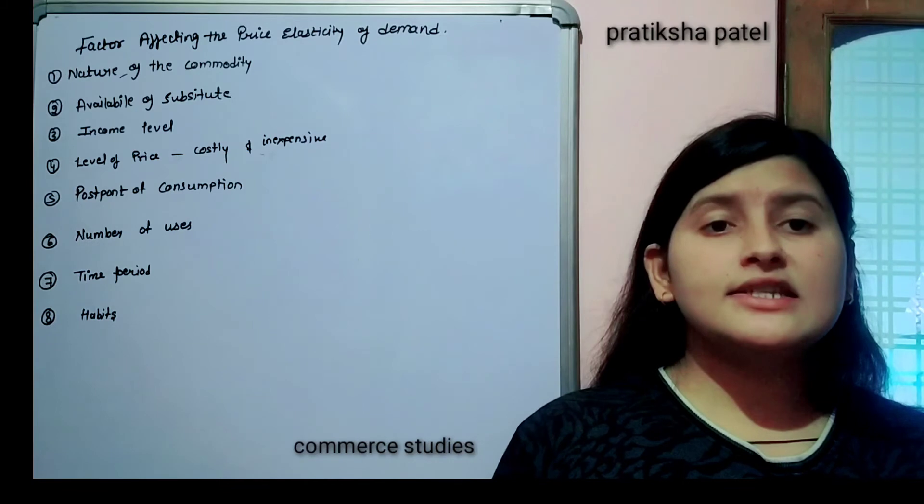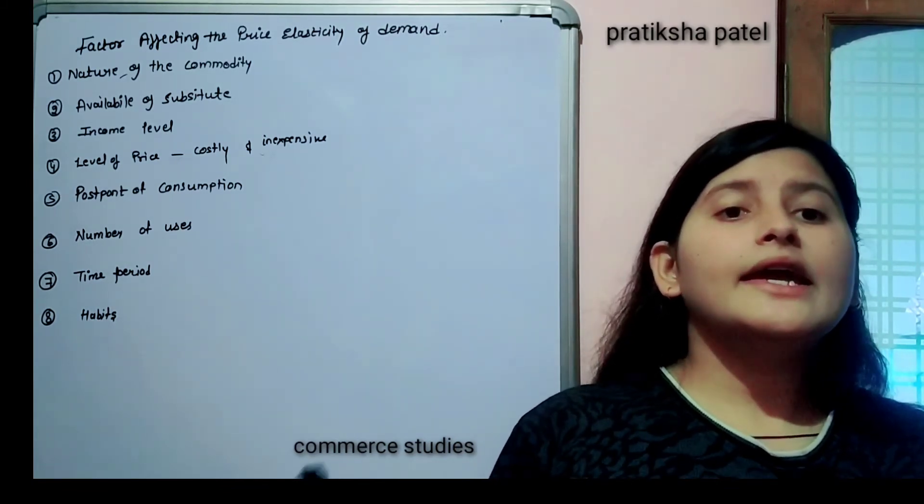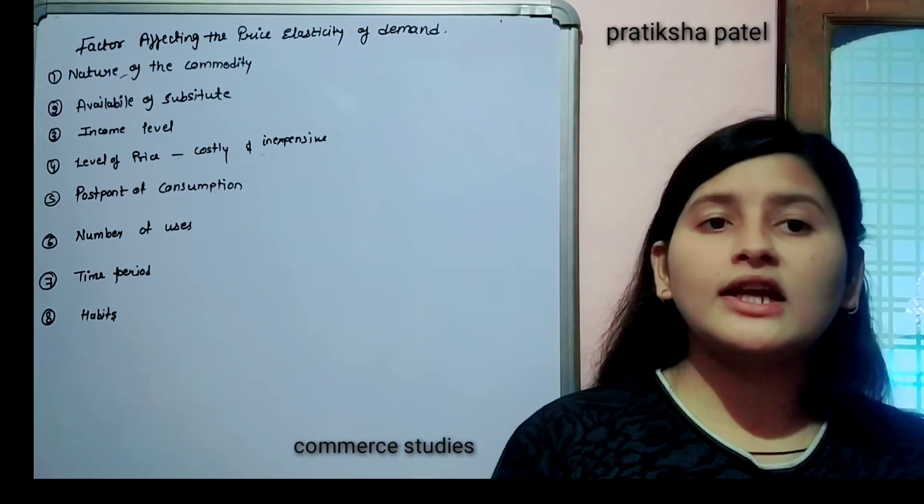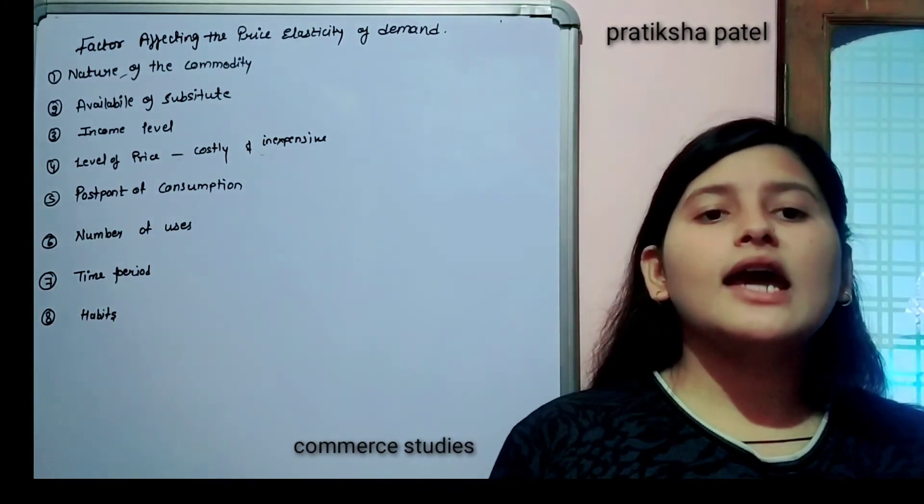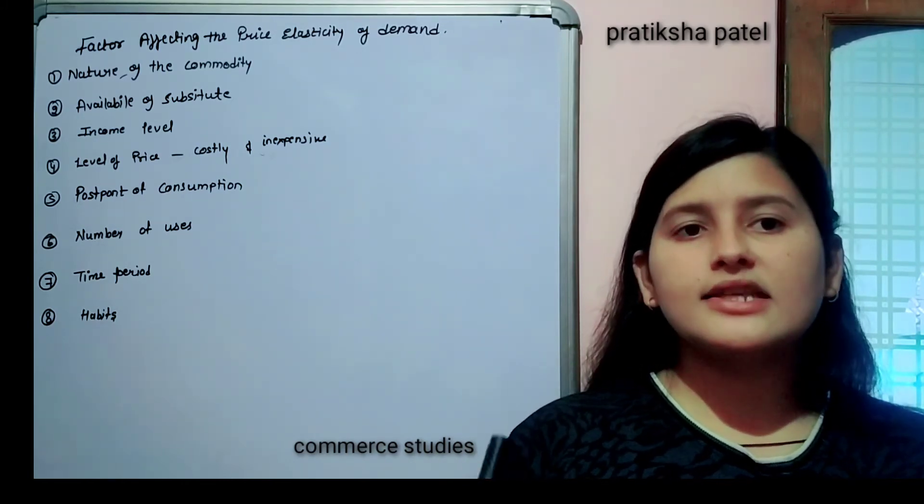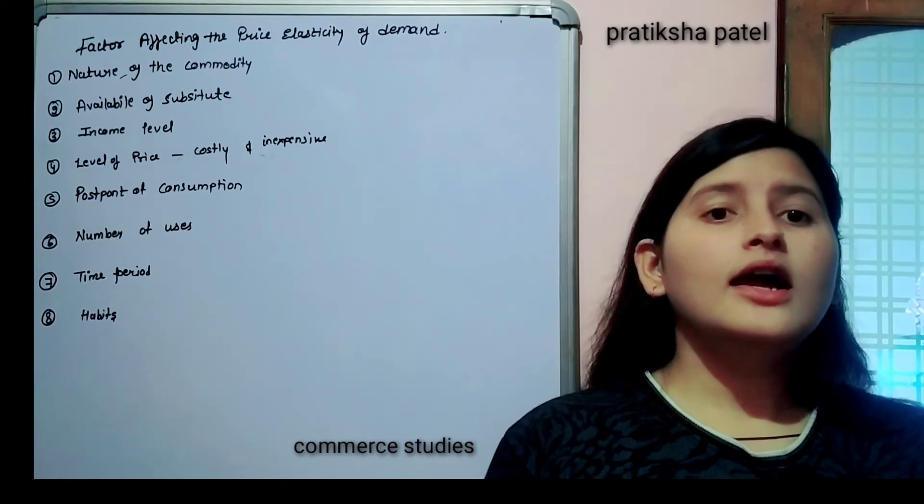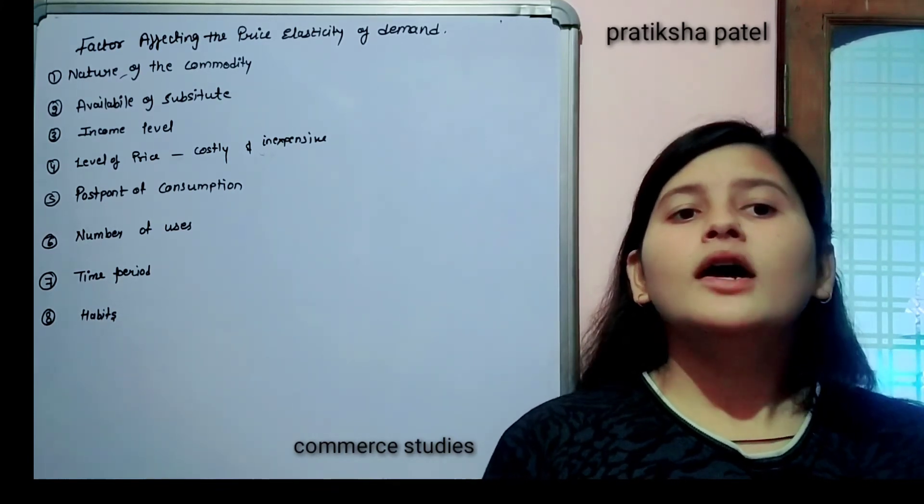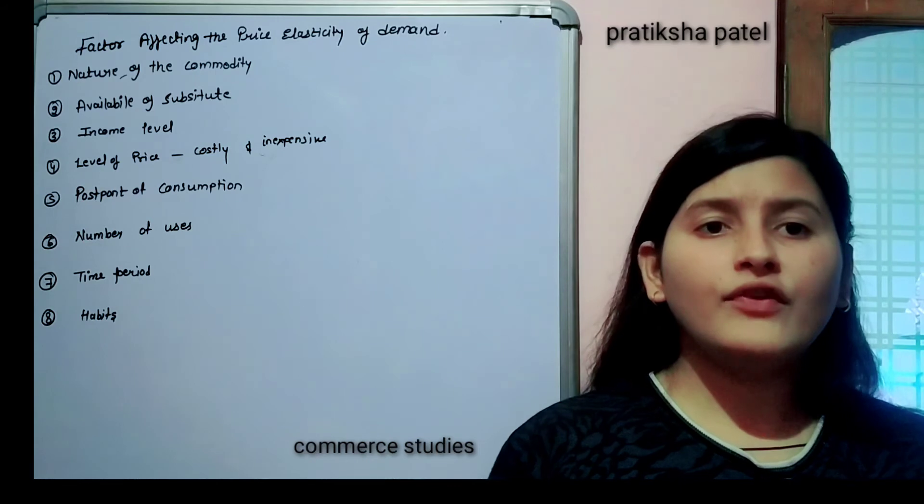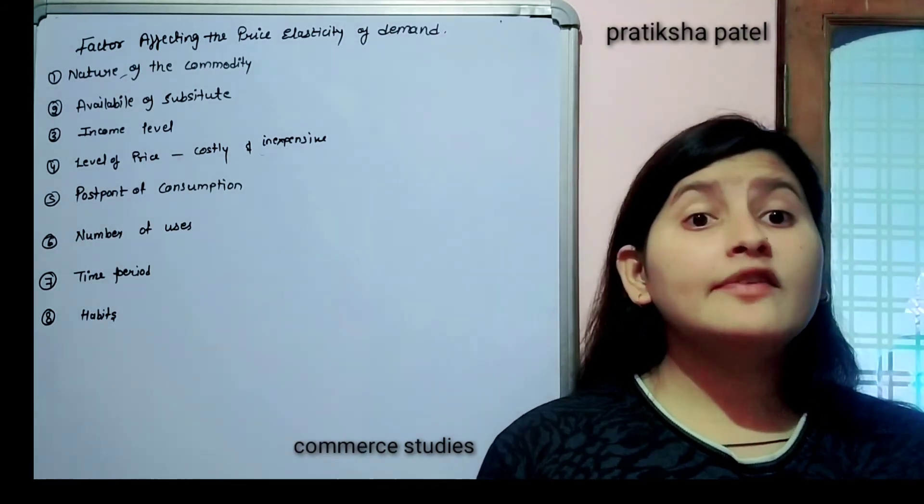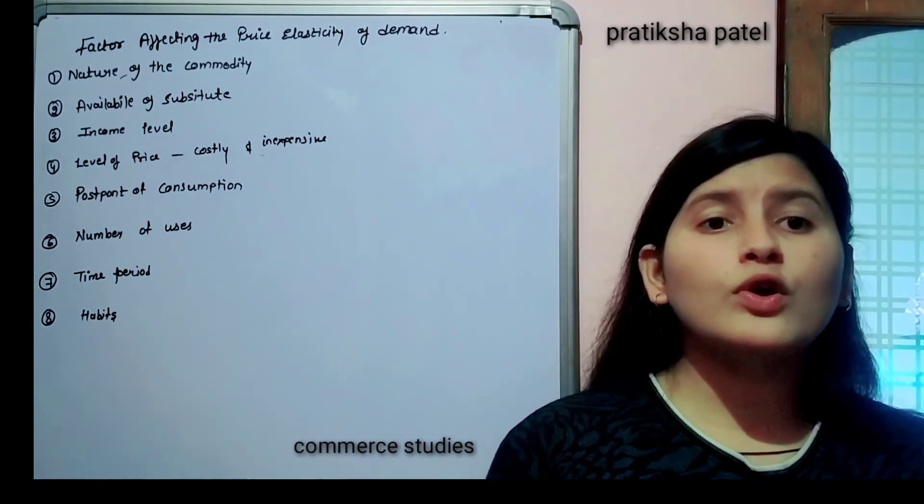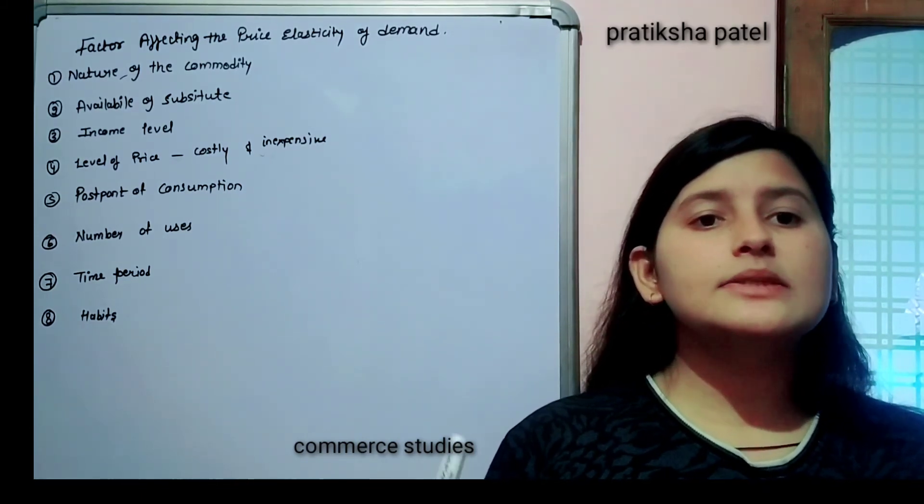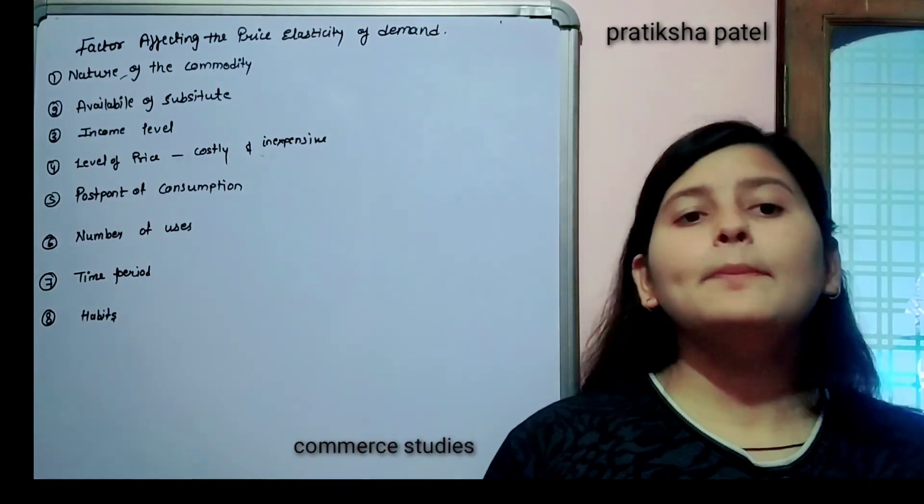Time period - yes, elasticity of demand is for a particular time period, a specific time period. It can be for one day, for one week, for one year, for one month, or for many years. It remains within the time period. Elasticity, suppose take an example, if we talk about winter season, basically in winter season we demand more woolen cloth, because in winter season we won't demand AC or fresh cooler. We cannot shift our demand, because in that specific time period, we have to fulfill the requirement of that particular thing. Elasticity is for a specific time period, for one time period.